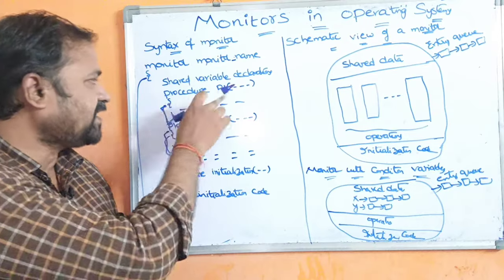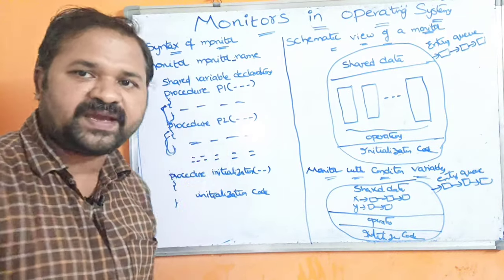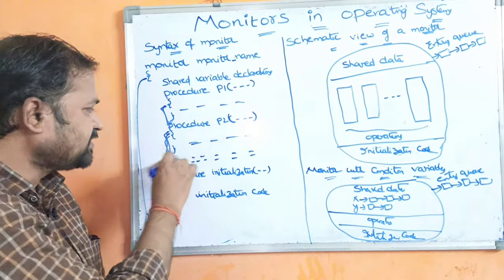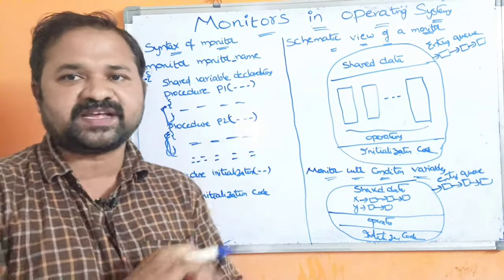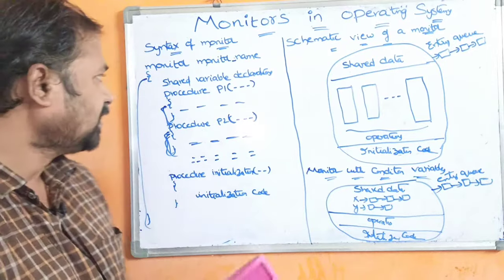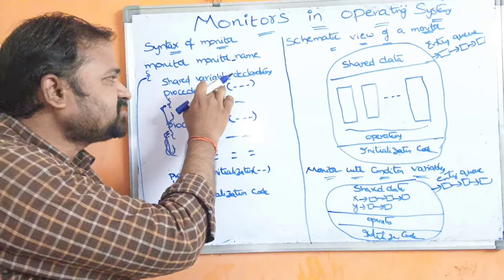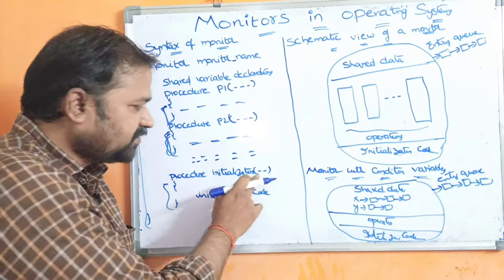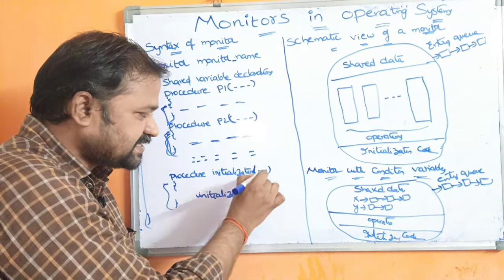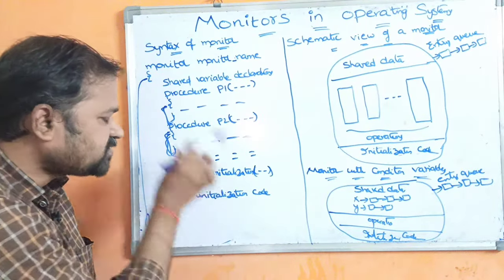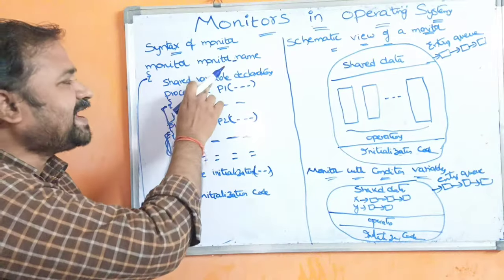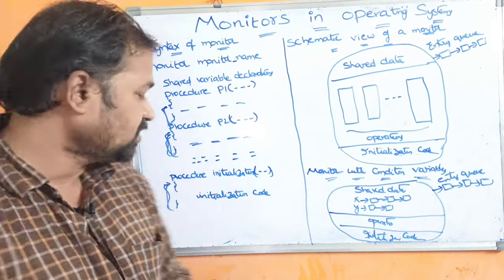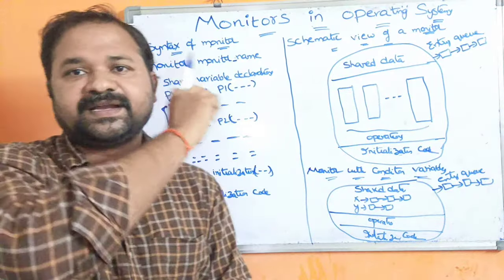The syntax for defining the procedure is: use a keyword 'procedure' followed by the name of the procedure, within the parentheses a list of arguments, and within the curly braces write the body for that procedure. We can define n number of procedures. In order to perform initialization on the shared variables, we can use one more procedure called 'initialization'. Initially, we want to perform some initializations for the shared variables, and that should be done in this procedure. In this way, we can define a monitor.